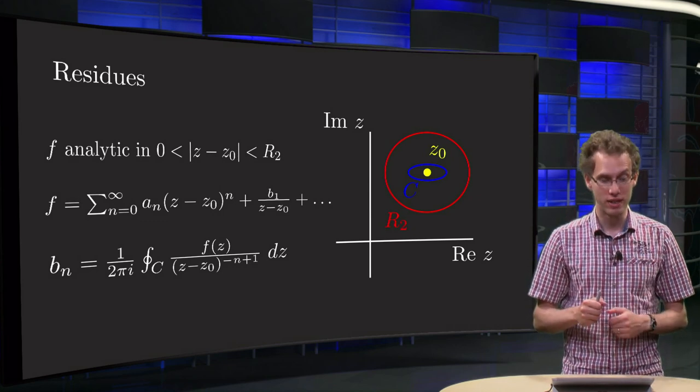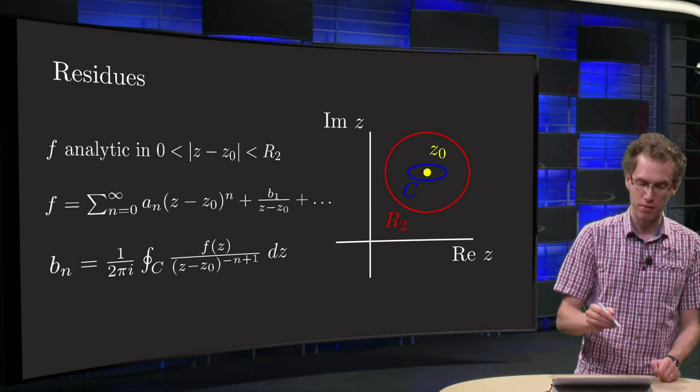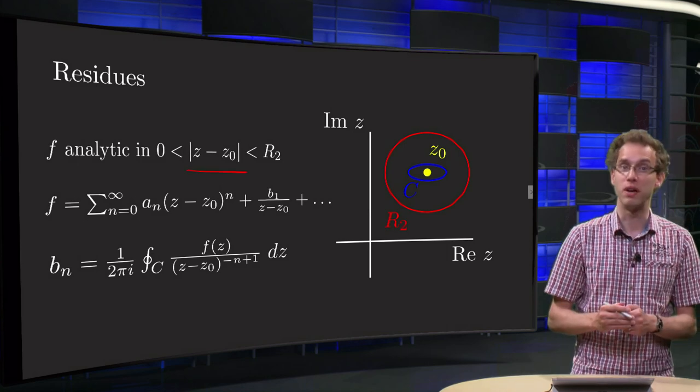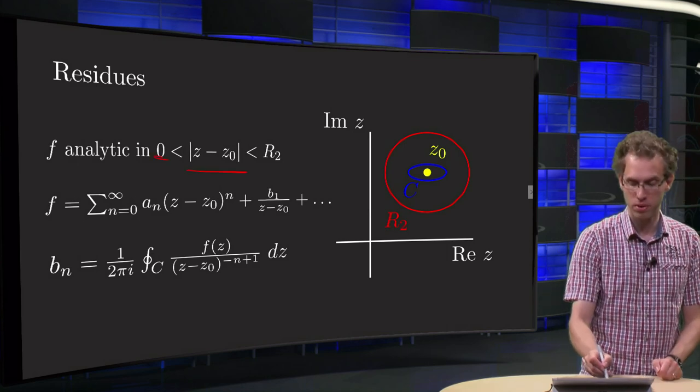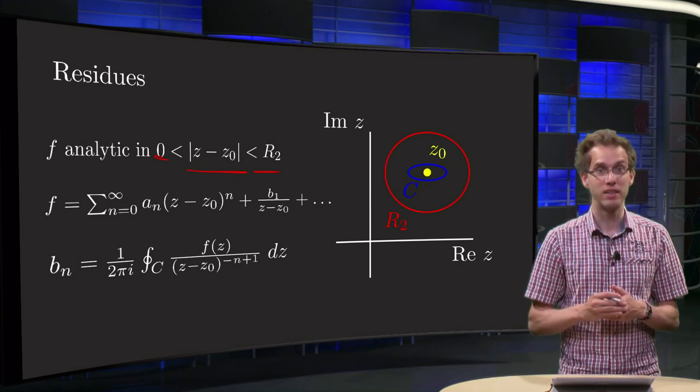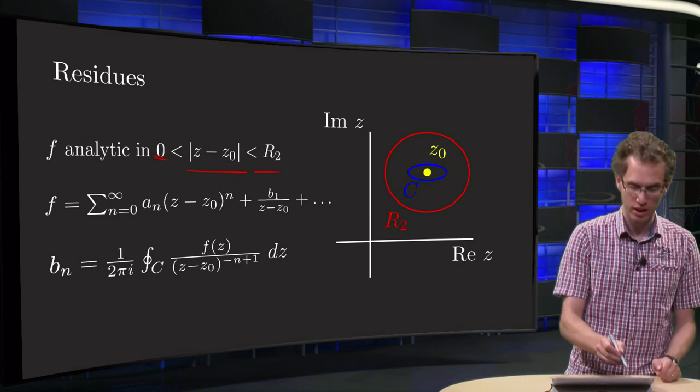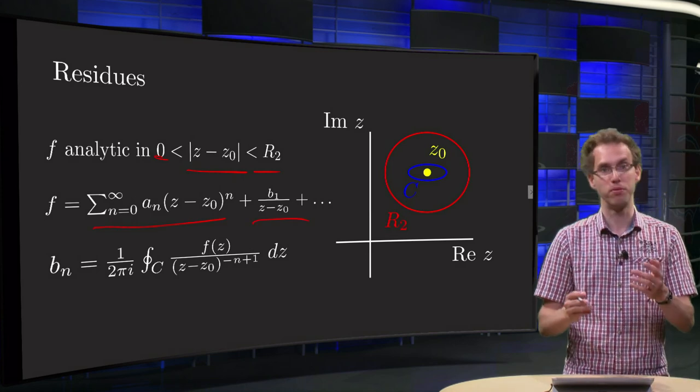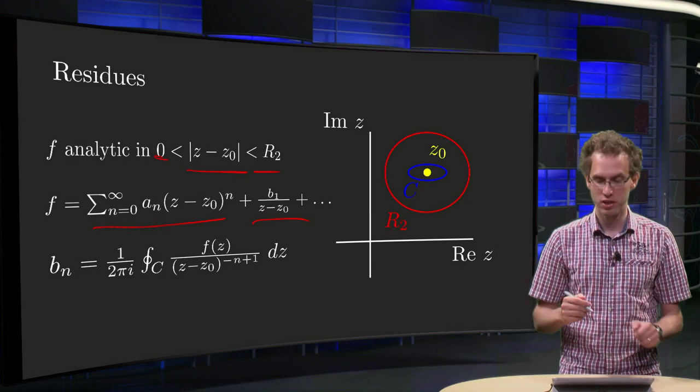So what's the idea? We know that our function f is analytic in some annulus where |z - z₀| is between 0 and some r₂. Then we know that we can expand f(z) in a Laurent series, which has an analytic part and the principal part b₁/(z-z₀) + b₂/(z-z₀)², etc.